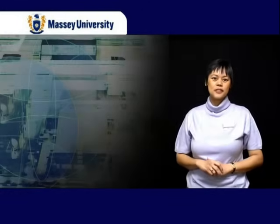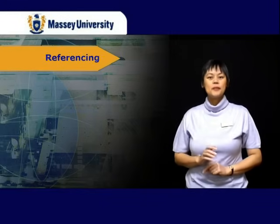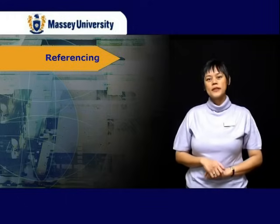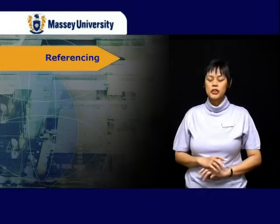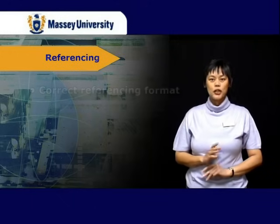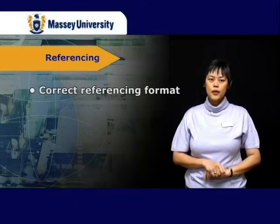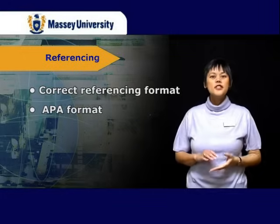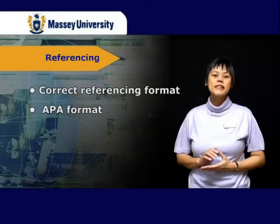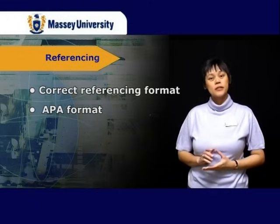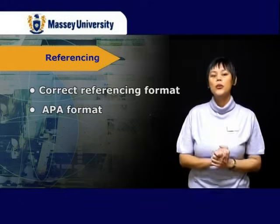Let's now look at style and structure. First, let's consider referencing, which is very important. Examiners are very pedantic about this. One examiner has said that no more than 10 referencing errors be allowed throughout the thesis, otherwise it should not be marked. That includes using the correct format for your referencing. Therefore, you must make sure that the correct referencing format is used. The general preference is for the APA format of referencing — that is the format used by the American Psychological Association. However, this may vary between disciplines, so it's best to check with your supervisor what reference style is used in your college.